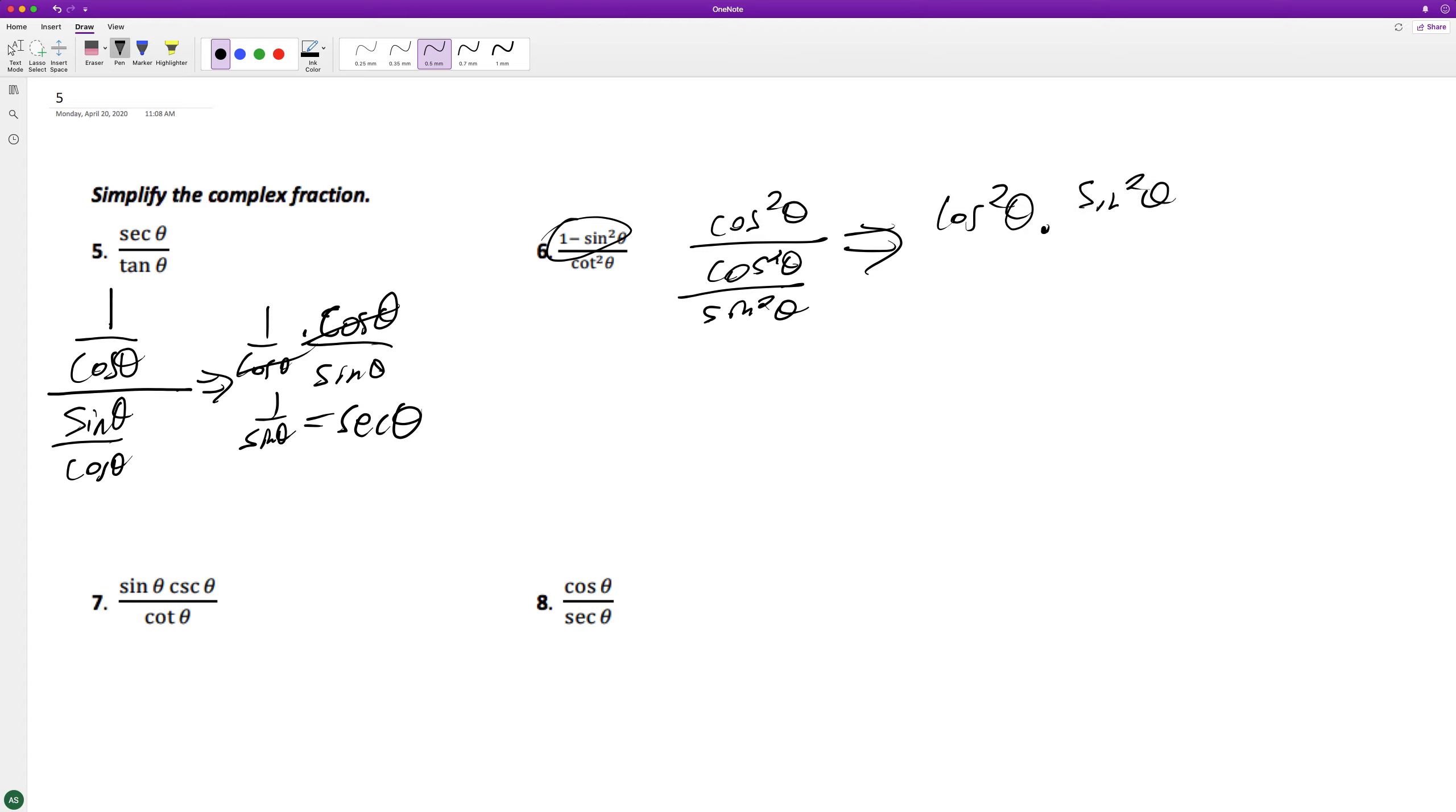Whenever you divide by something, you can multiply by its reciprocal. These cancel out, and you're simply left with sine squared theta.